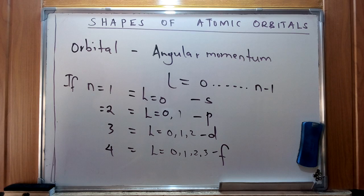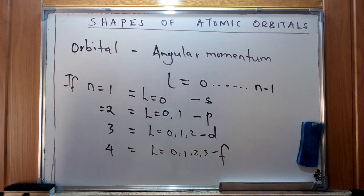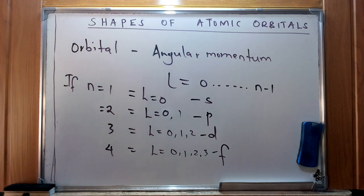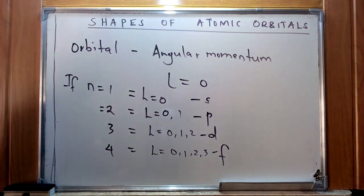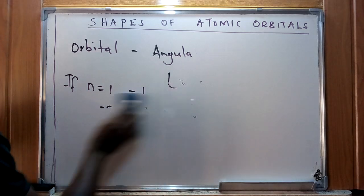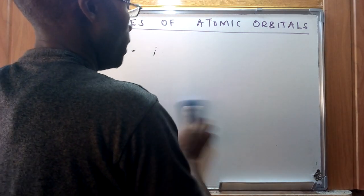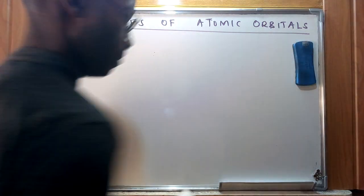For today, we are going to look at the shapes of the different orbitals — s, p, d, and f — which will shed light on how we can identify them. The shapes of atomic orbitals are given by the angular quantum numbers and are derived from the deviation of the electron cloud from the nucleus.